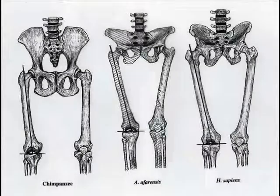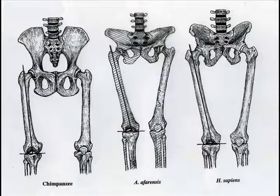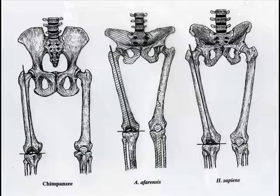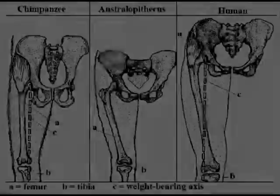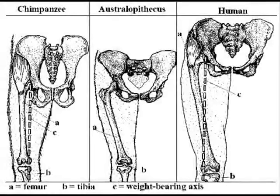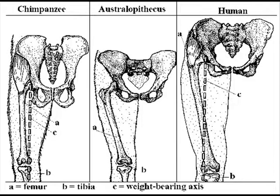Another indicator of bipedalism in the Australopithecines is found in the shape and structure of the pelvis. The chimpanzee pelvis is tall and slender in comparison to the human pelvis. In this image, we also see that the leg bones of chimps come straight down from the pelvis, while human leg bones are angled out from the pelvis.